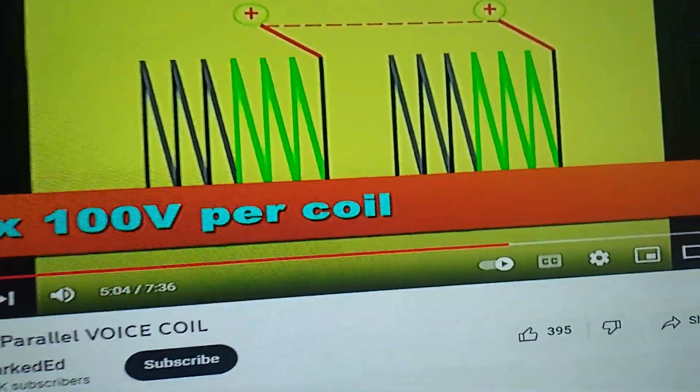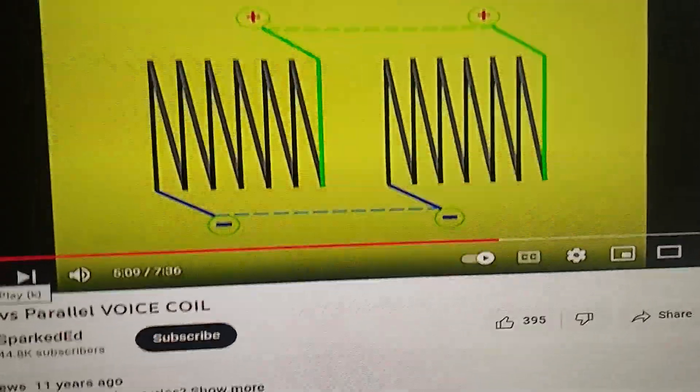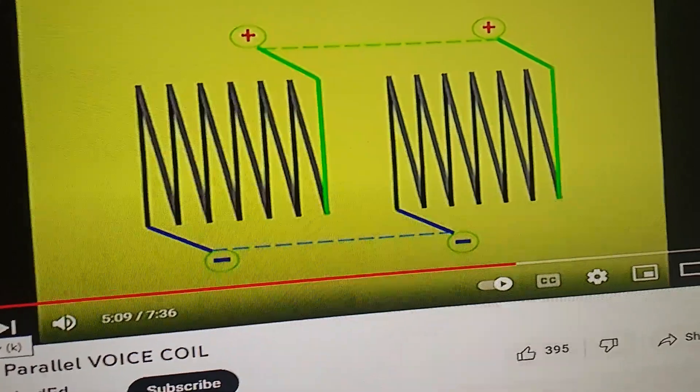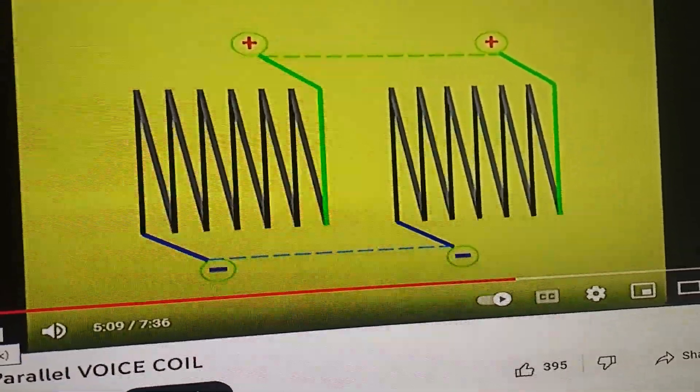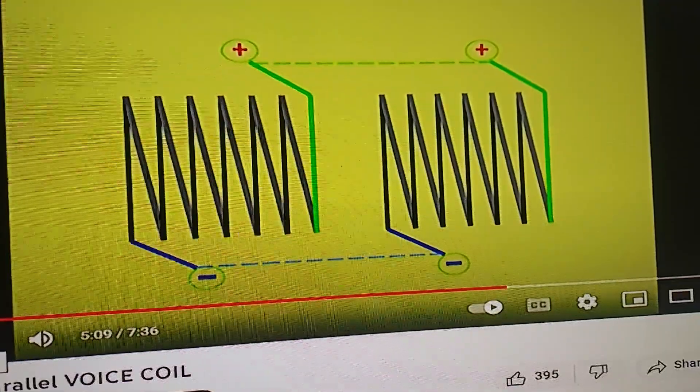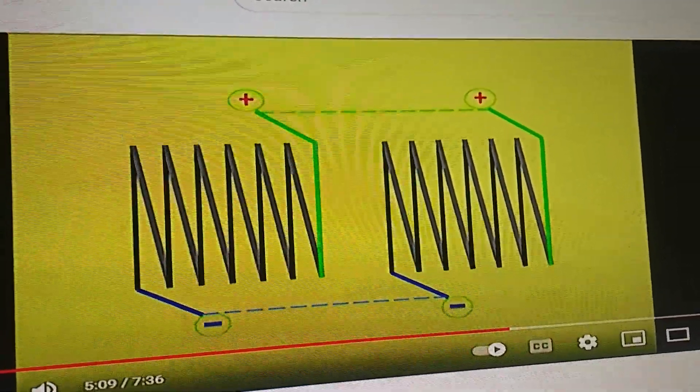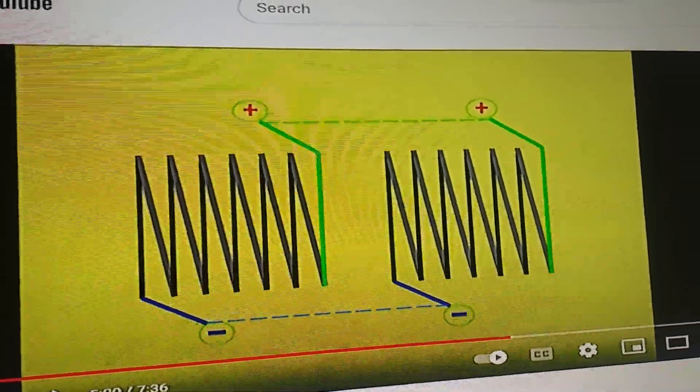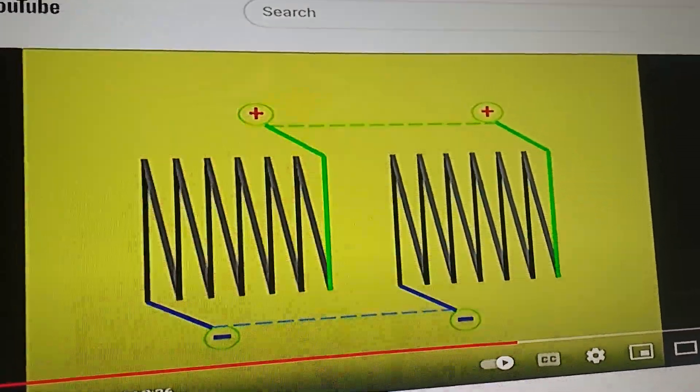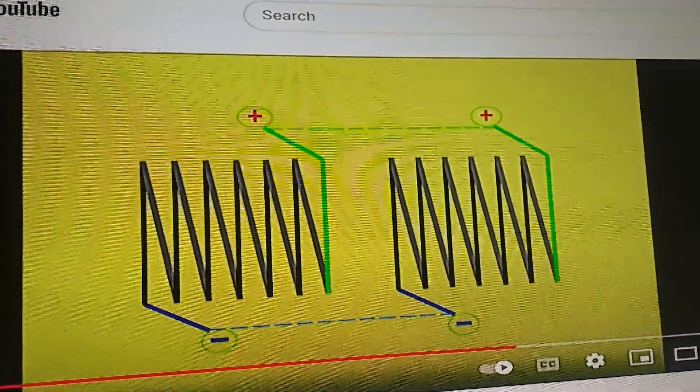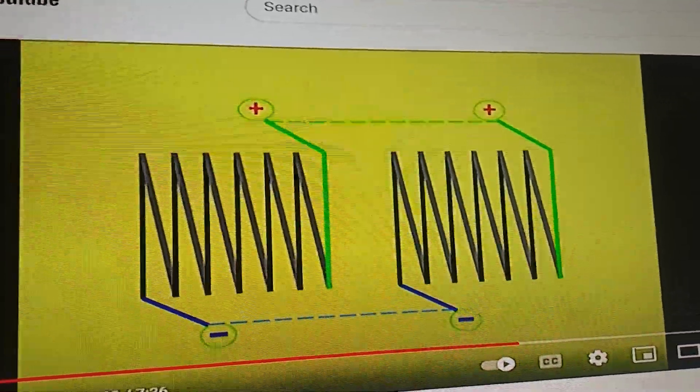There was another one - I gotta pause this. The example he gives in the beginning of the video is how he wired them in parallel and his system got louder. That is what's called anecdotal truth - meaning for him in that situation, that was true.